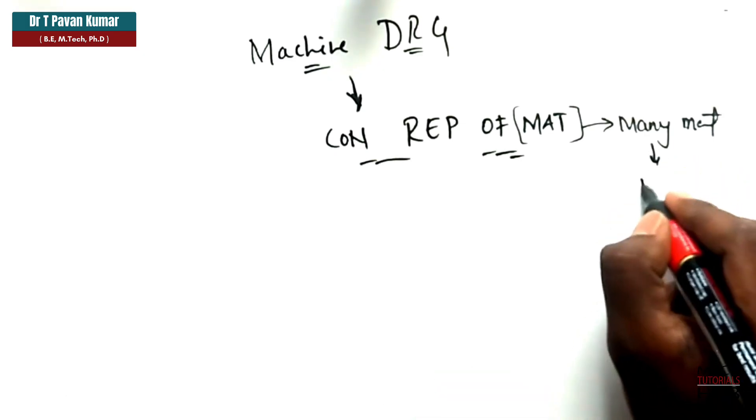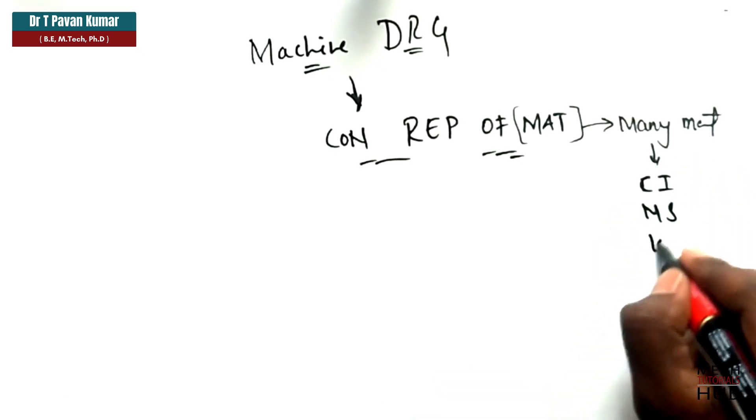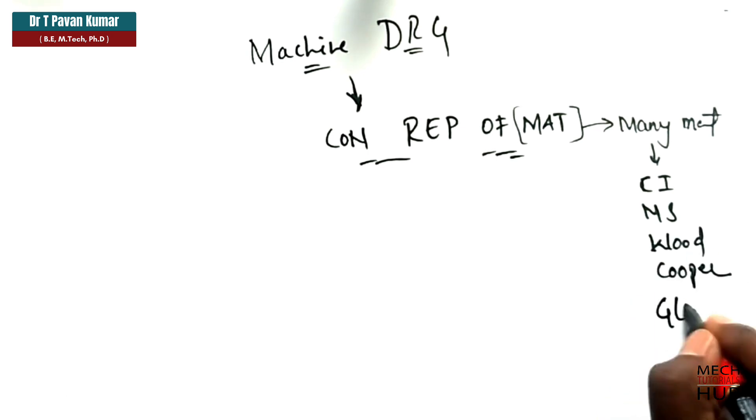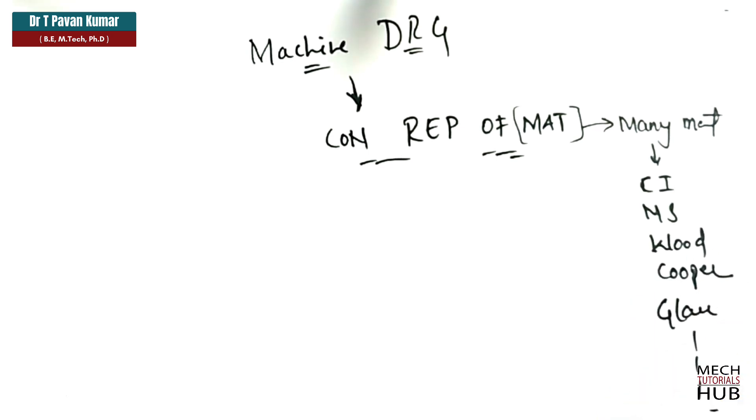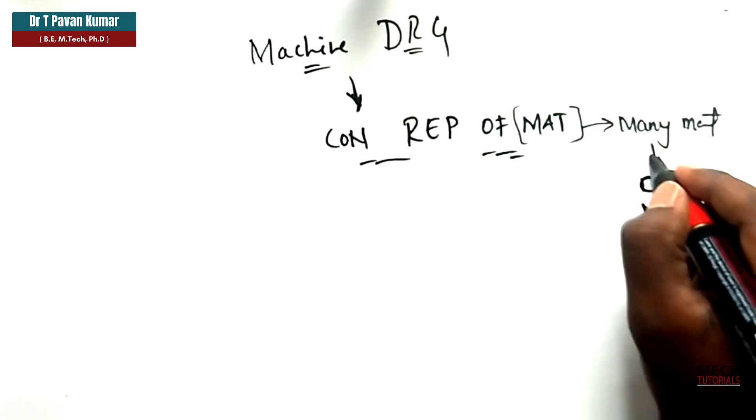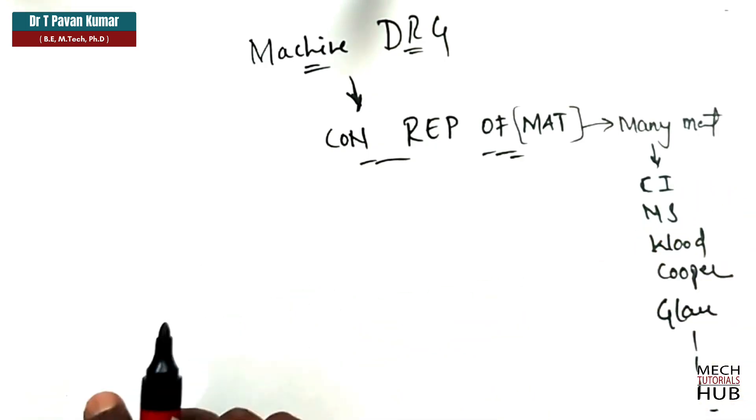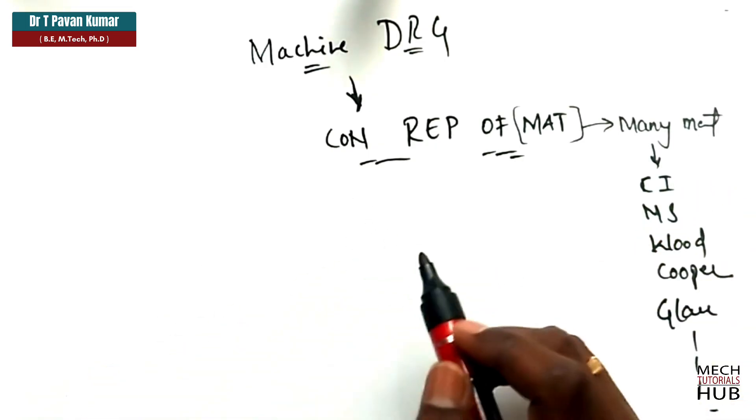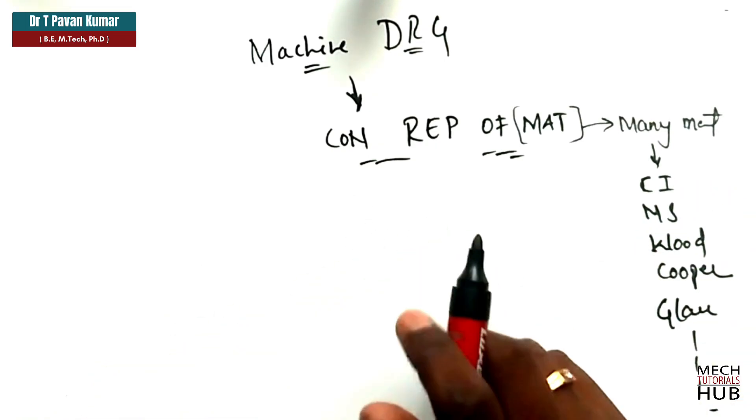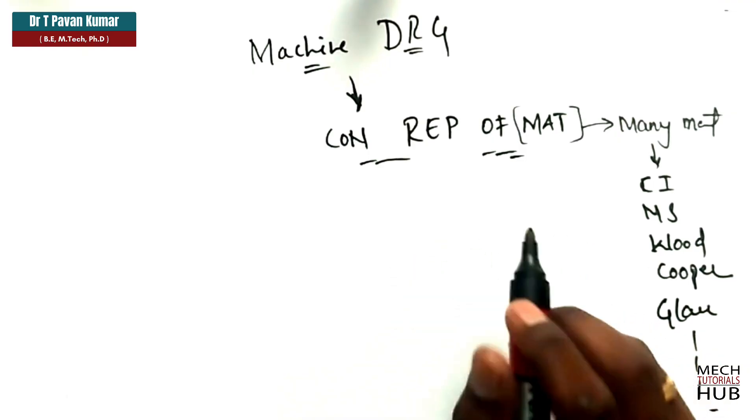we deal with many types of materials. For example, I'll name it as cast iron, mild steel, maybe wood, copper, glass. Likewise, we have many other materials where we need to deal with.